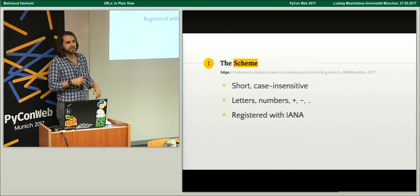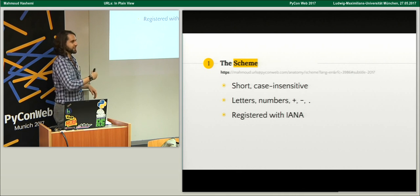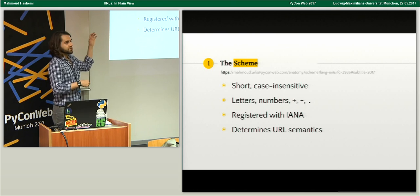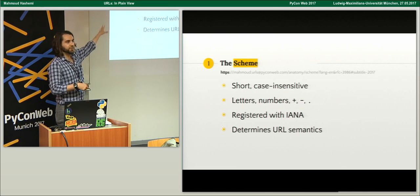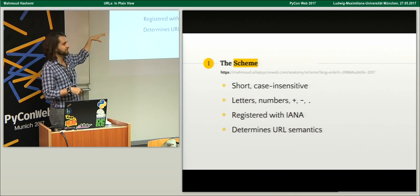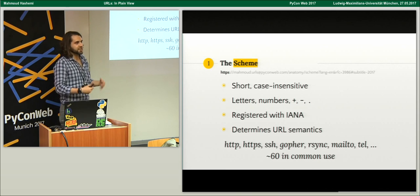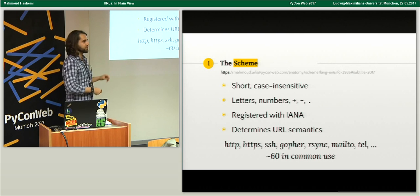Schemes are explicitly registered with the IANA — the International Association for Numbers and Addresses, or something like that — who also register all the port numbers. The scheme determines all of the following semantics for that URL, so different URLs will act differently. HTTPS is probably one we're very familiar with, but we also have SSH, rsync, gopher, mailto, tel, and about 60 others I found in common use.